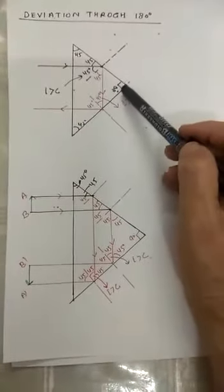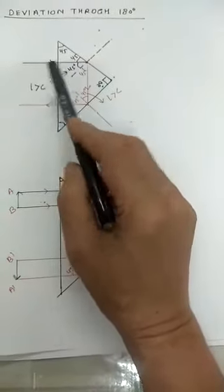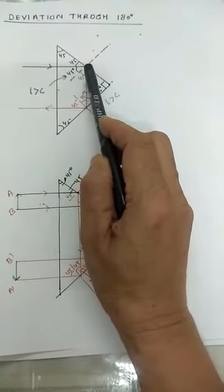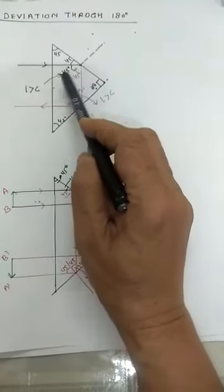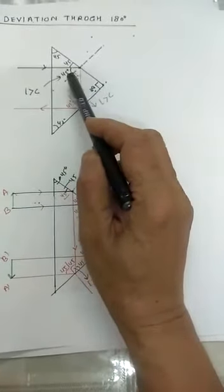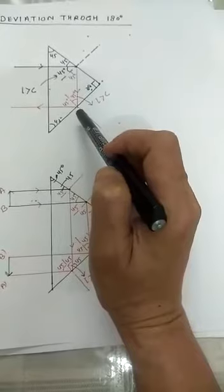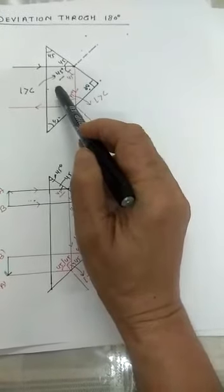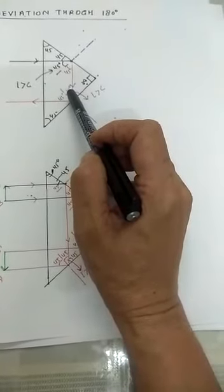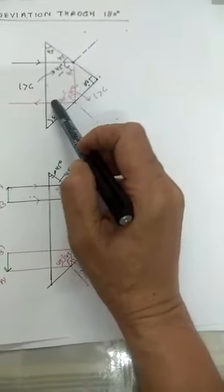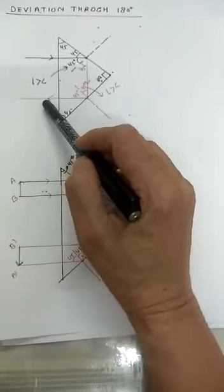Now we have placed the prism this way and made the ray incident on the hypotenuse surface. By following the same rules, we see the ray coming here, the medium is changing. The medium is changing, but the angle of incidence is 45 degrees. Now 45 degrees again, it is greater than the critical angle. It will reflect here. Now it reflects, here again the medium is changing. But here it is not normally incident. Rather it is incident at 45 degrees. Again it will be totally reflected and it will go in this way. Then the ray has been deviated through 180 degrees.